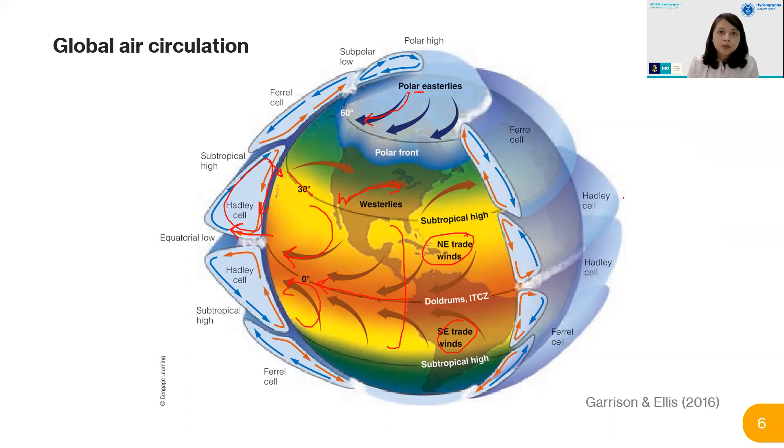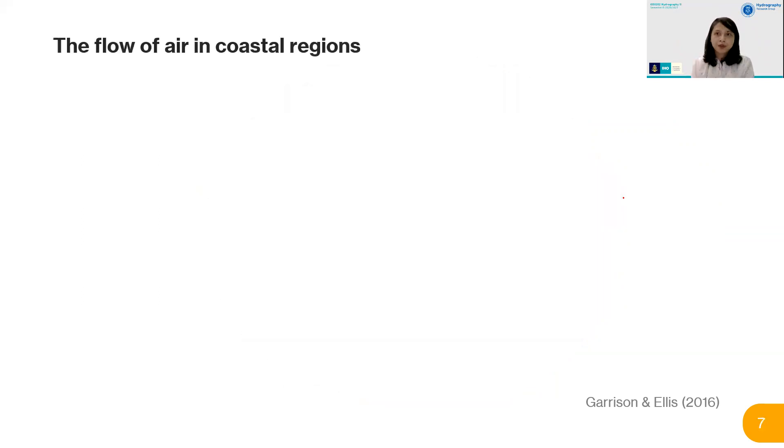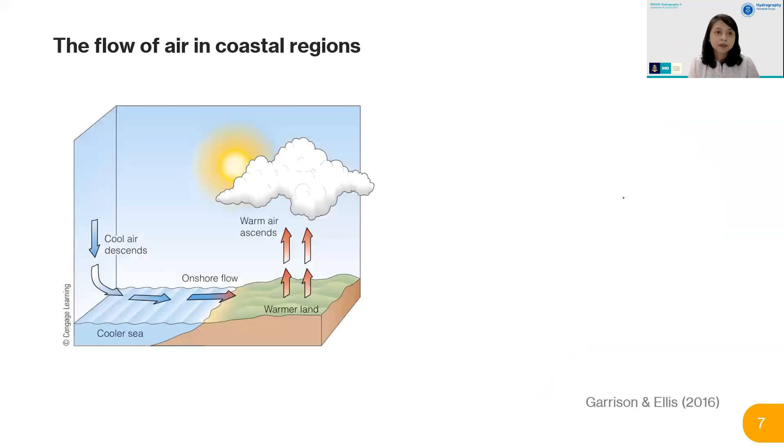We understand global air circulation, but what about local circulation? In a coastal region, this type of convection actually occurs. In daylight, you have warmer land but cooler sea, creating a flow where air goes up over the land and cools down at the sea. This is called angin laut, or sea breeze, which we learned about in elementary school.